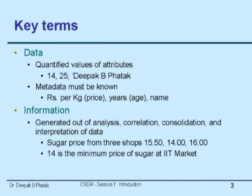So here are the key terms. Data — everybody is familiar with that term. Data is usually a quantified value of some attribute or characteristic of an entity. So 14 is a number, 25 is a number. 25 alone does not convey any meaning of what data it is. So you typically have to associate something called metadata about that. Metadata is nothing but data about data. So if we say 14, it makes sense only if we say something like: this is the price of sugar in rupees per kg.